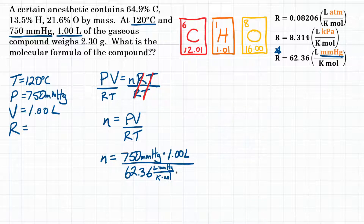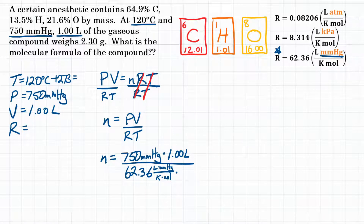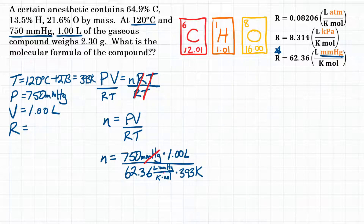Our temperature is 120 degrees Celsius, but we need it in Kelvin. Adding 273, we get 393 Kelvin. Before solving, let's check unit cancellation: millimeters of mercury cancel, liters cancel, and Kelvin cancels, leaving us with moles — which is exactly what we're solving for.